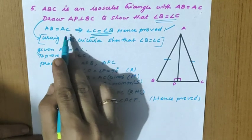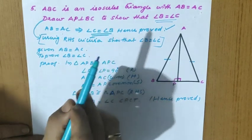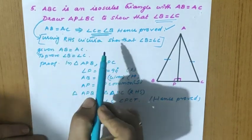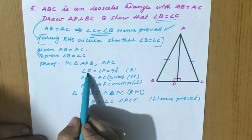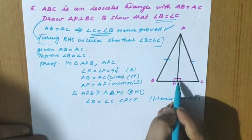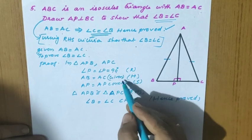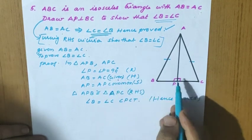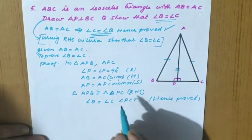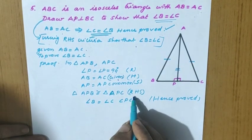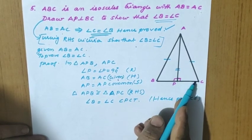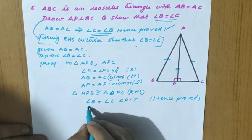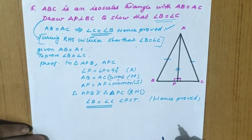Therefore triangle APB is congruent to triangle APC by RHS criteria. By CPCT, angle B equal to angle C. Hence proved. When the question asks using RHS, we use angle P as 90 degrees, AB and AC as equal hypotenuses, and AP as the common side to show congruence, then conclude angle B equal to angle C. Thank you, today's class is wound up.